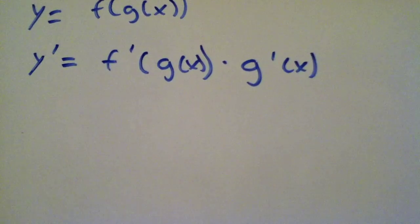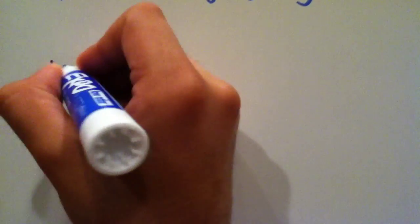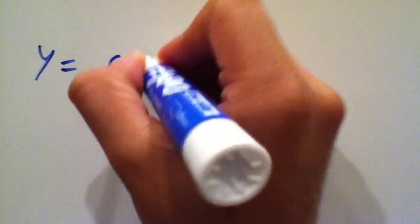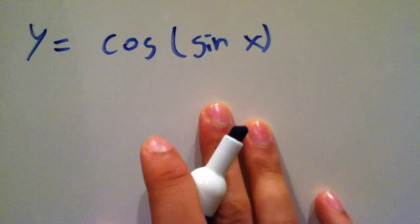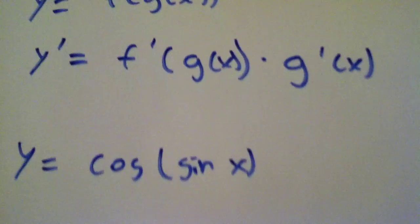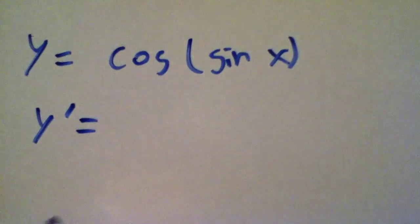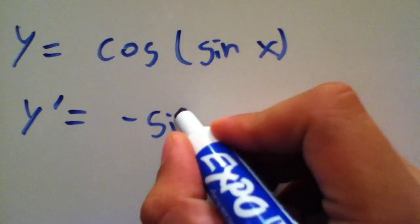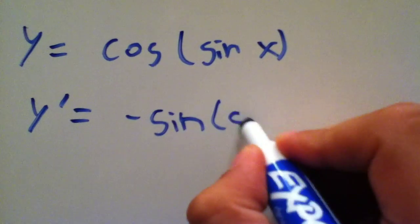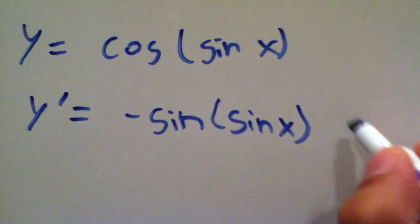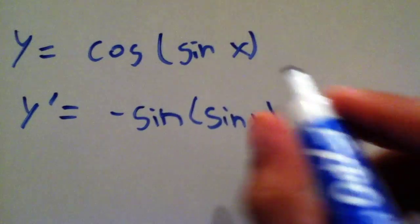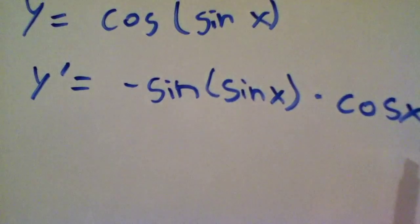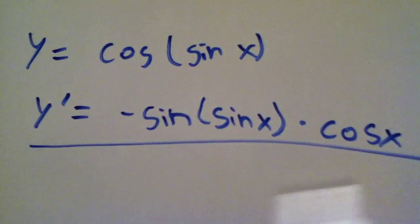Let's do a couple of examples. The first example is finding the derivative of y equal to cosine of sine x. You can clearly see f is cosine and g is sine x. So y prime equals the derivative of the outside function, which is negative sine, evaluated at the inside, sine x, multiplied by the derivative of the inside function, sine x, which is cosine x.